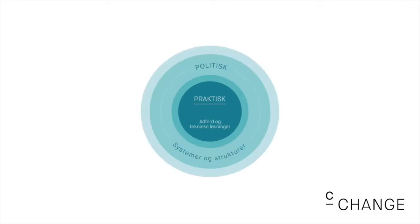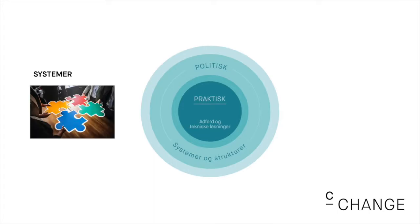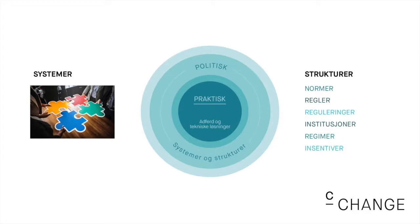The political sphere represents the systems and the structures that facilitate or constrain practical responses to climate change. Systems can be described as relationships between parts to form a whole, and structures describe the norms, rules, regulations, institutions, regimes, and incentives that influence how systems are designed, organized, and governed.